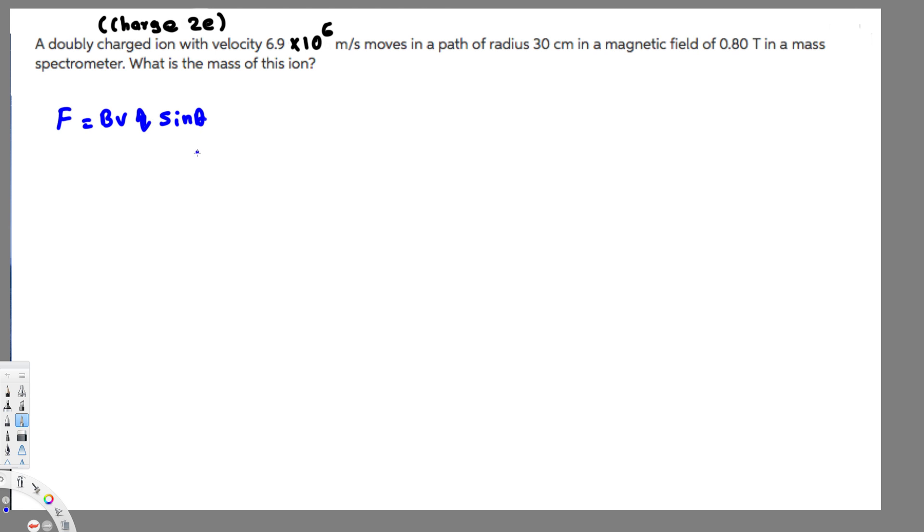The charged particle is always perpendicular to the magnetic field, so the angle is 90 degrees. This will be sin90, and that equals 1, so we can just write Bvq.